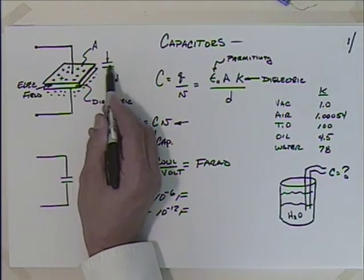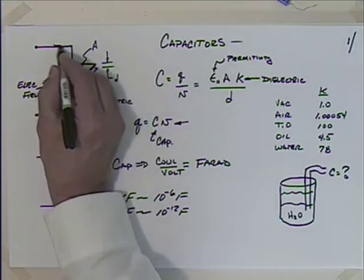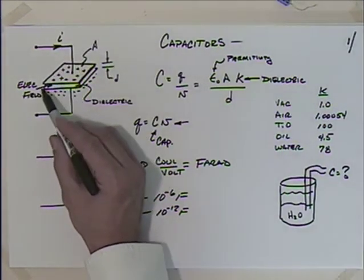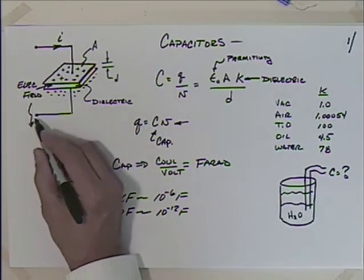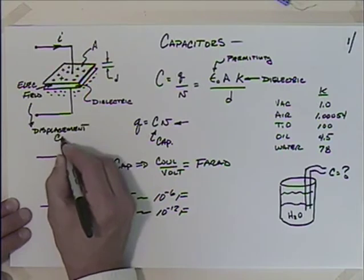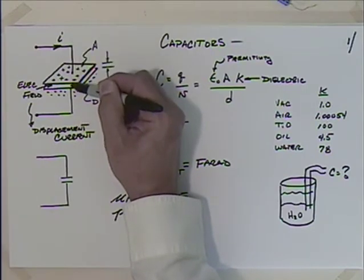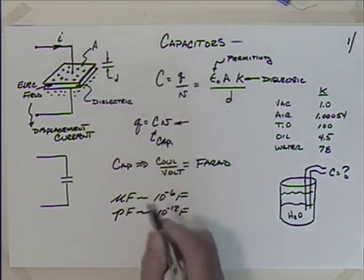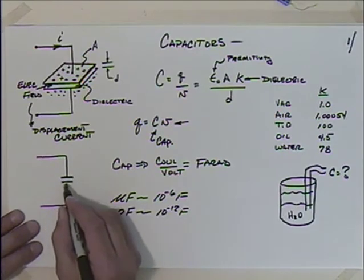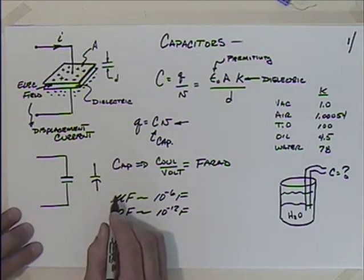Although the plates are separated by a distance and the circuit appears open, current can actually flow because of what's known as a displacement current set up by the electric field. This traditional conduction current is transferred across the gap by the electric field and the displacement current. The symbol for a capacitor sometimes has the lower piece curved, indicating an electrolytic capacitor.